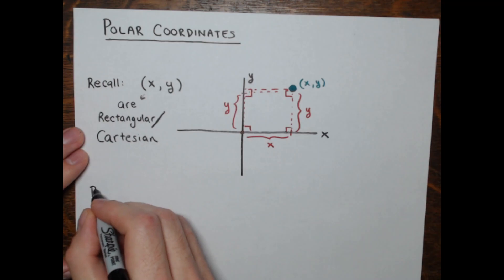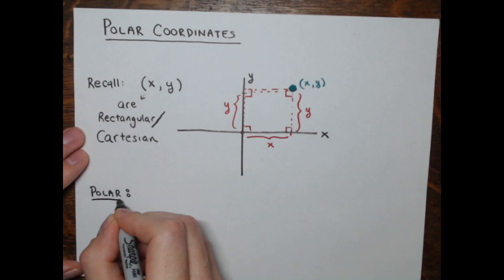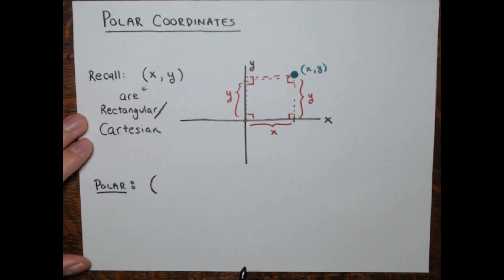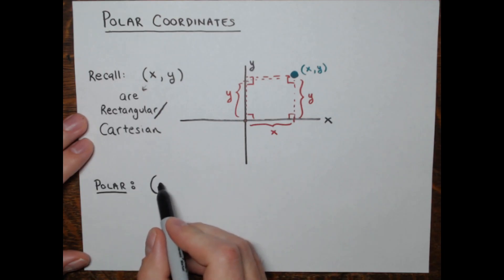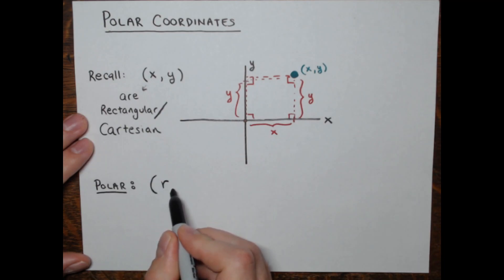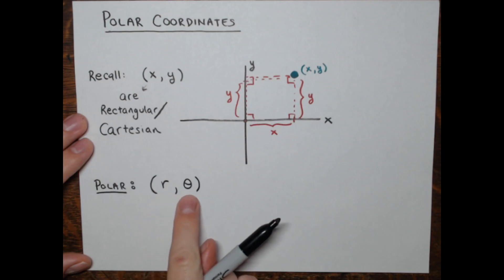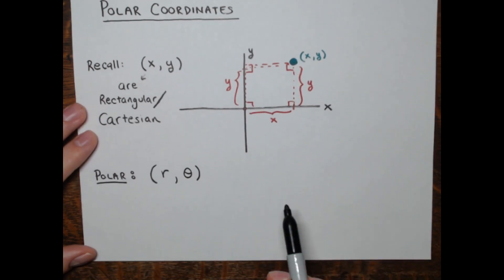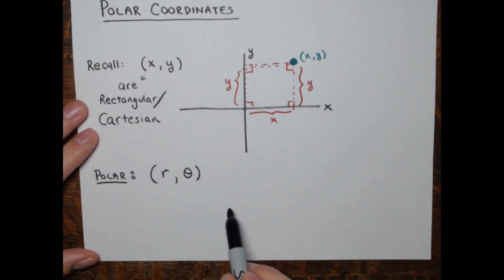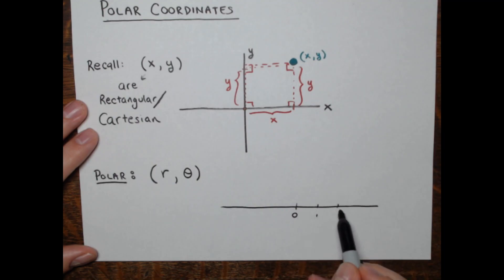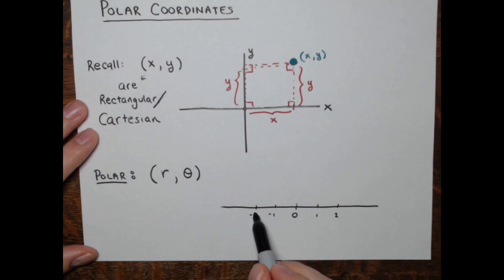Now, polar coordinates — the new coordinates introduced here. It's still an ordered pair describing how to get to a location on the plane, but in a totally different fashion. Instead of x and y, you'll be given a value for r and theta. In polar, you only have a horizontal axis — a number line with zero in the middle, positive numbers to the right, negative to the left. This number line represents possible values of r and is called the polar axis, also known as the radial axis, because r represents the radius of a circle.